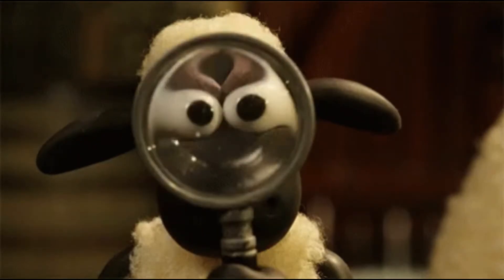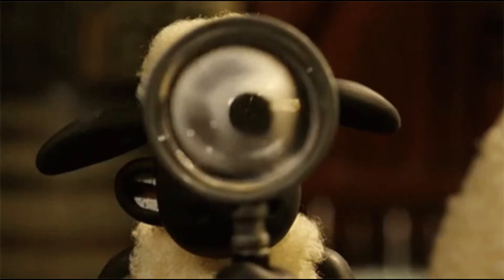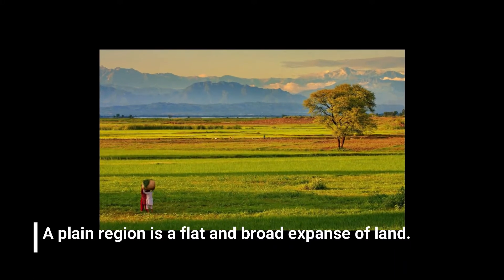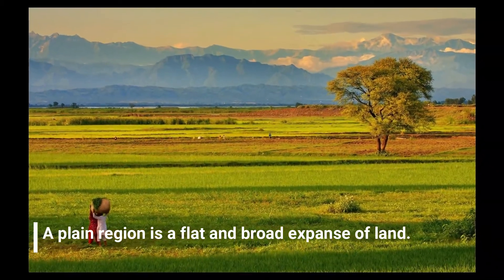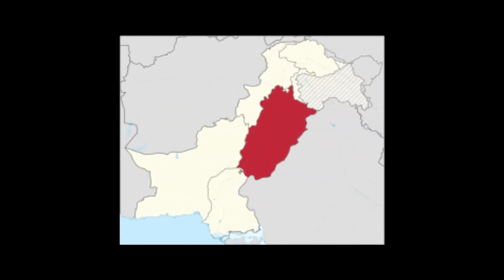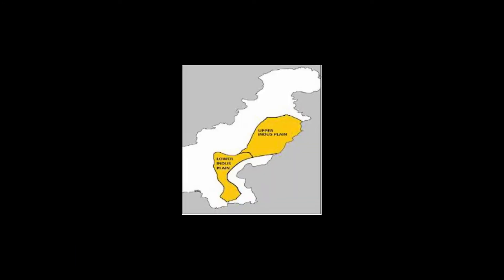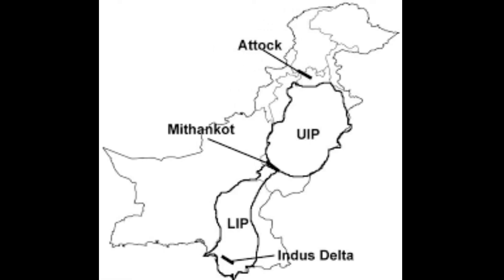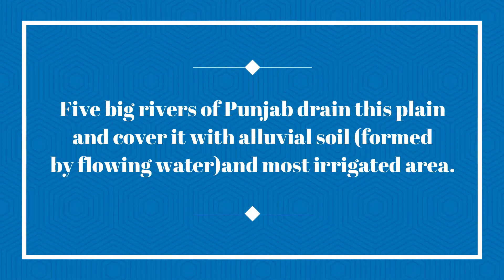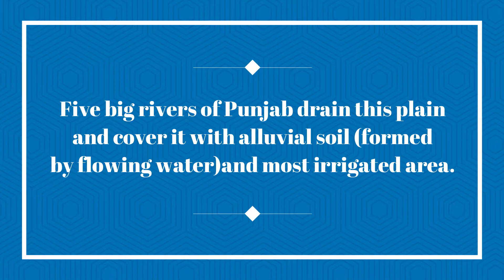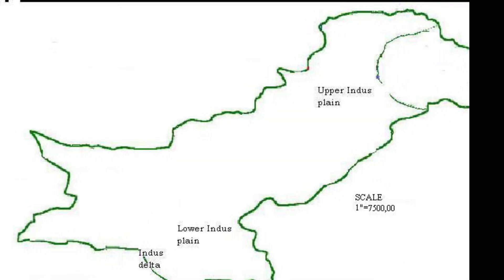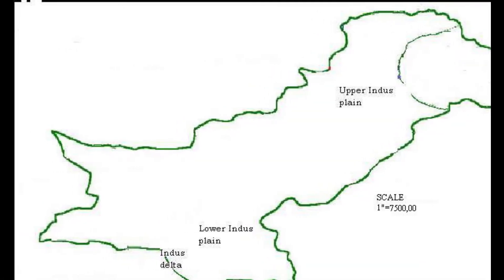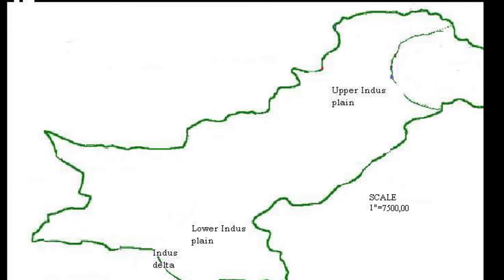Sab se pahle wale ko dekhte hain which is plain region. Plain region ka matlab hai a flat and broad expanse of land. The plain region of Punjab is also called the Upper Indus Plain. This region expands from Attock to Mithankot. Five big rivers of Punjab formed and covered it with alluvial soil, which is formed by flowing water. Most of the land has a congested population and big cities like Faisalabad and Lahore are also located here.